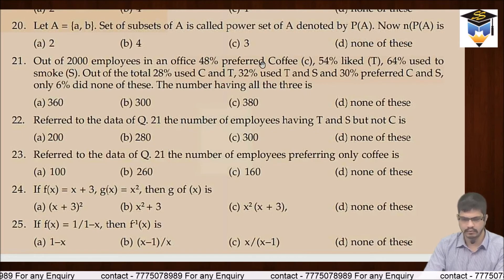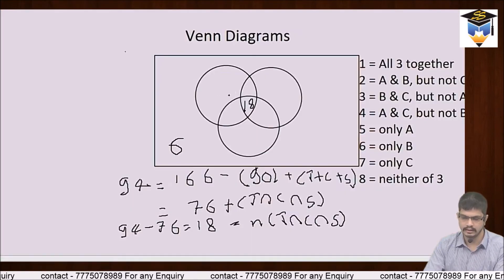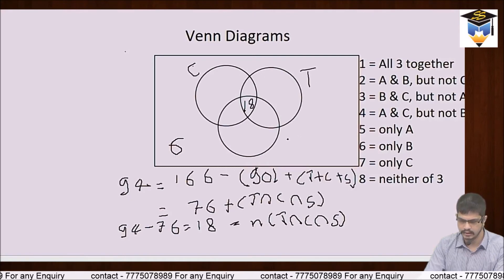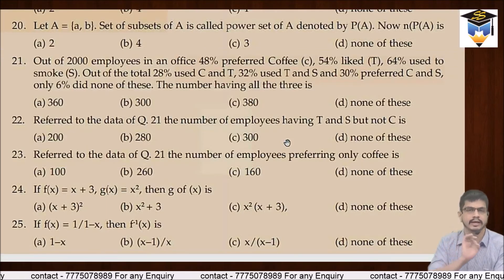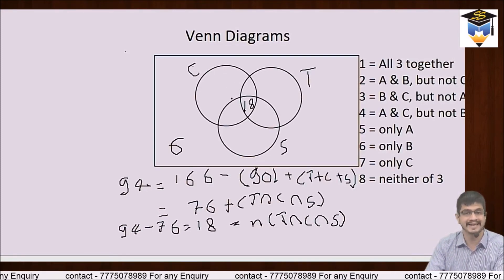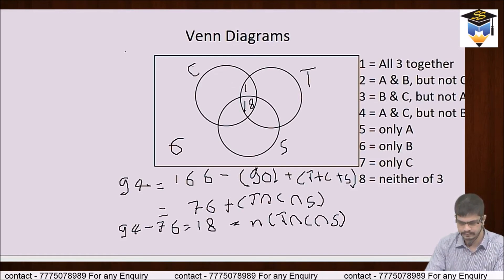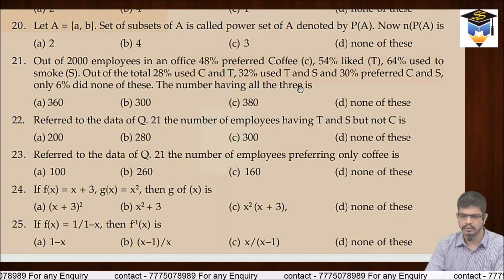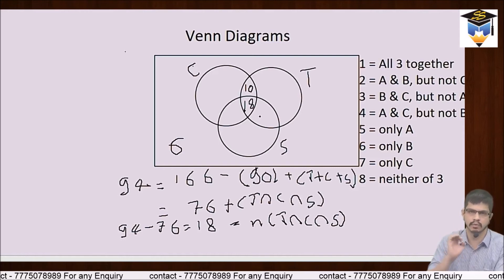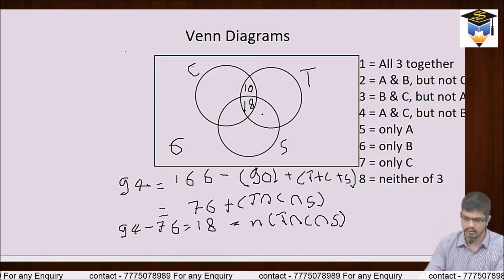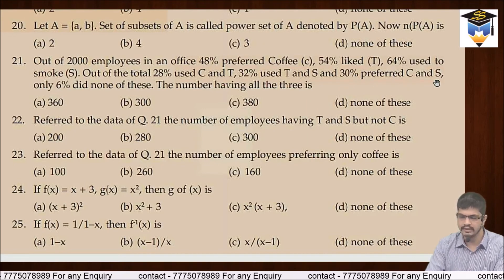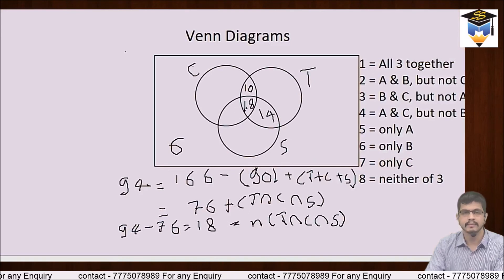Ab problem se numbers fill karte hain. Coffee and tea dono peene wale hain 28%, jisme se 18% already smoke bhi karte hain. Toh sirf coffee and tea (not smoke) = 28 − 18 = 10%. Tea and smoke waale hain 32%, minus 18 who also prefer coffee = 32 − 18 = 14%. Coffee and smoke waale hain 30%, minus 18 = 30 − 18 = 12%.